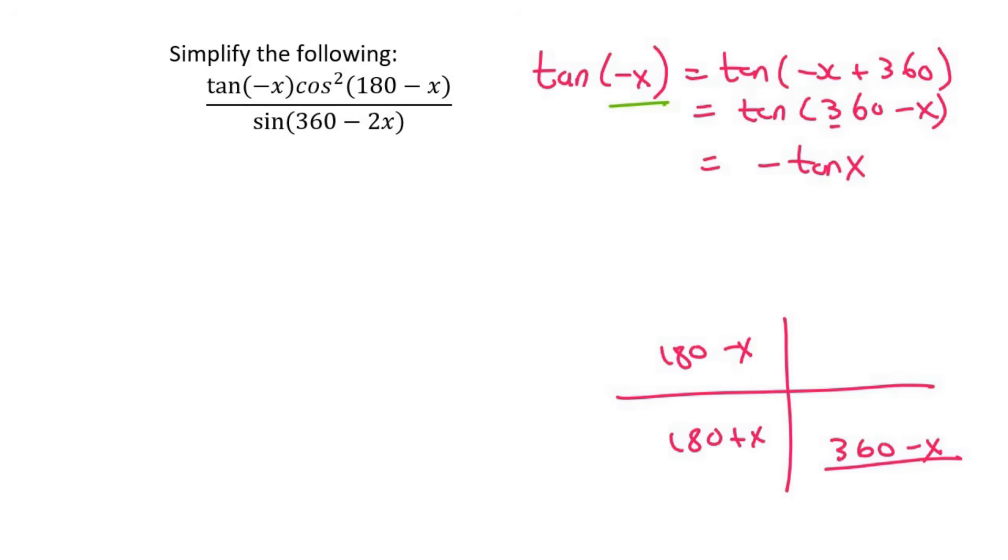Now remember, I said in the previous question, some students panic with that little 2 over there. Don't worry about the 2. Just think about it as cos of 180 minus x. Now that is on the cos diagram, so we can say cos x. But cos is negative in that quadrant, so we'll put a little negative.